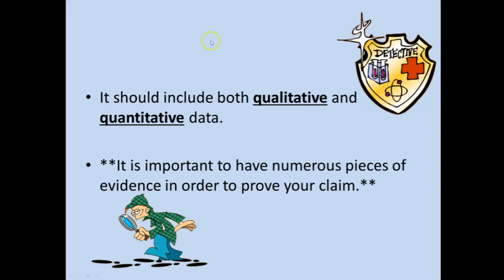Your data should include both qualitative and quantitative data, if you have it. Qualitative data is things like color. Quantitative data is numbers. You should include as much data as you have that proves your claim — not just one piece of data, unless the experiment only gives you one piece of data, and some might actually do that.